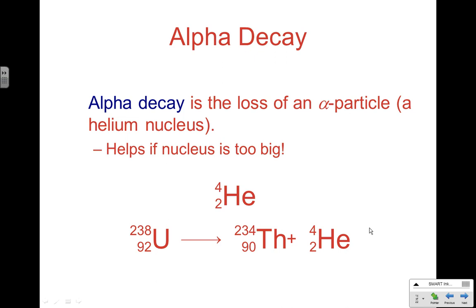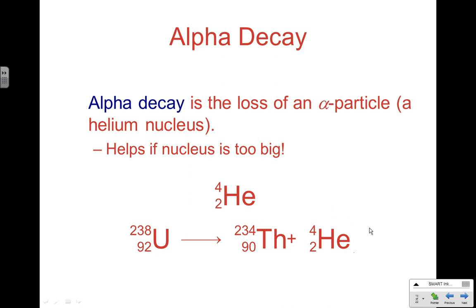If we had a missing particle and didn't know it was an alpha particle, we'd say: 238 minus 234 equals 4 for the mass number, and 92 minus 90 equals 2 for the atomic number. Looking up atomic number 2 in the periodic table gives us helium — that's our alpha particle. In balancing nuclear reactions, the total number of protons and neutrons before and after must be equal, which means balancing our mass numbers and atomic numbers.